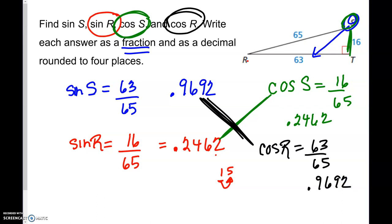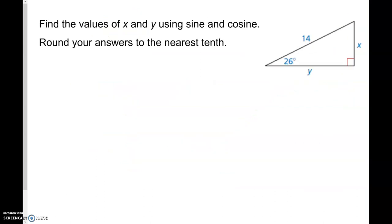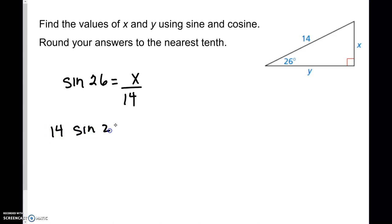There are two more things to review. Finding X and Y using sine and cosine: first, the sine of 26 is opposite over hypotenuse. To solve, we take 14 times the sine of 26, and rounding, we get 6.1. You should definitely stop and try this before going through the answers.